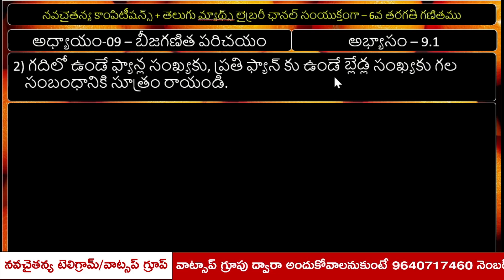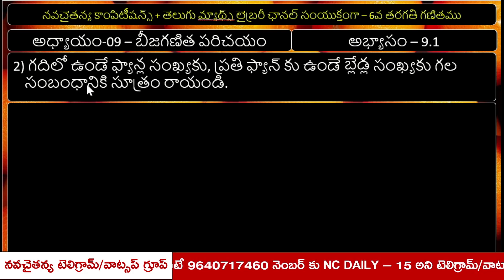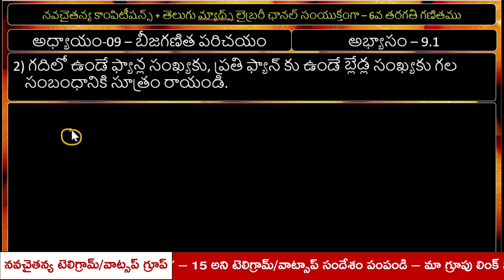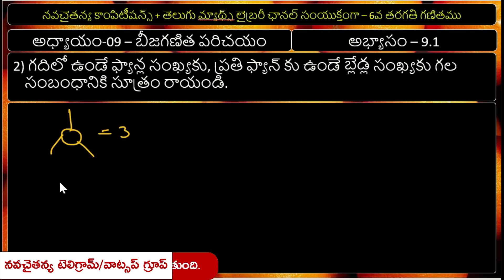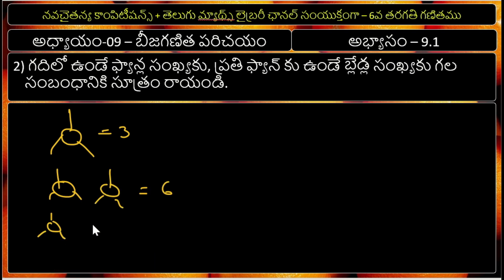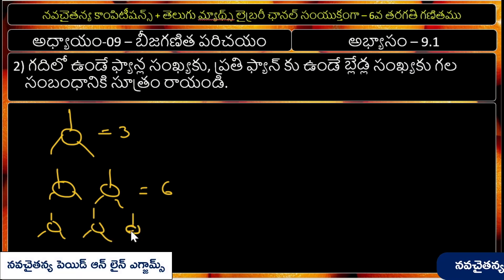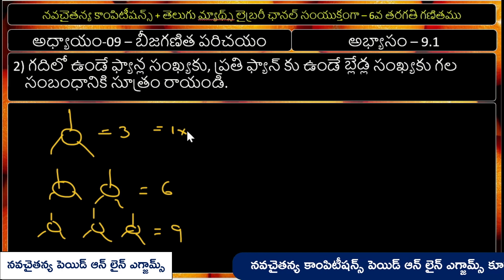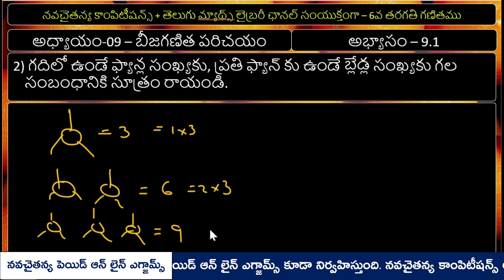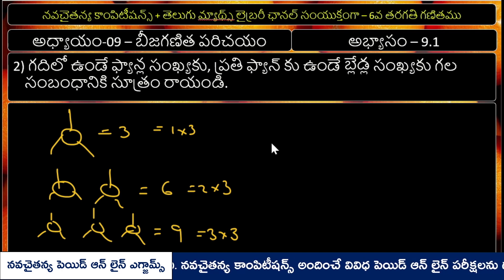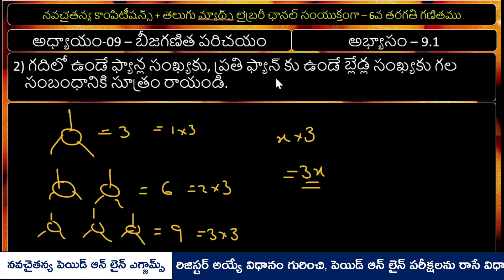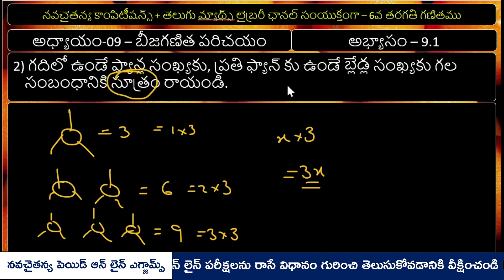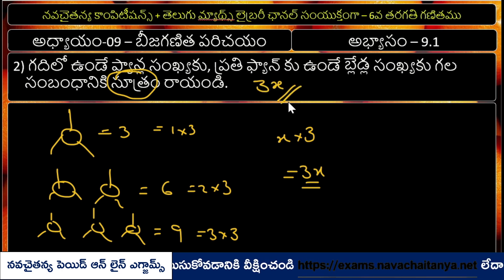If you have a blade in the fan, you have a blade to change — 1, 2, 3. You want a fan to change 3. Suppose you have 2 fans: 2 fans is 6. 3 fans is 9. So 1 fan is 1 into 3, 2 fans is 2 into 3, 3 fans is 3 into 3. Suppose you have x fans: x into 3, and 3x is your formula.